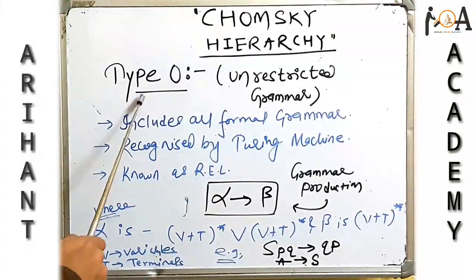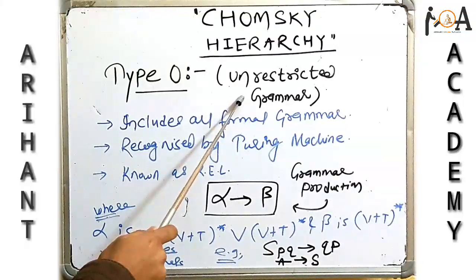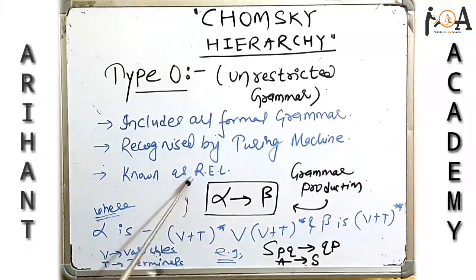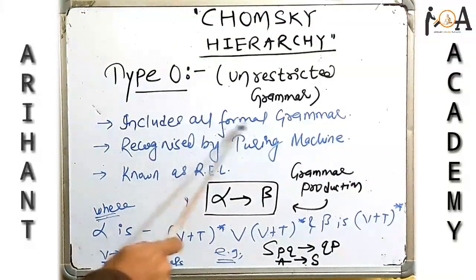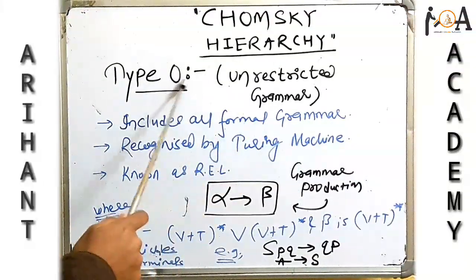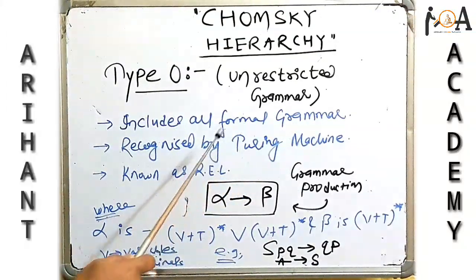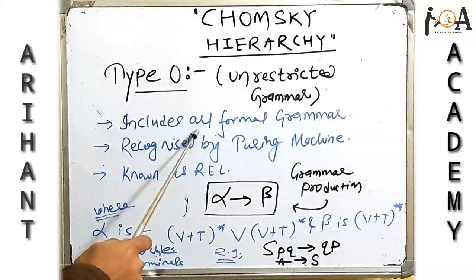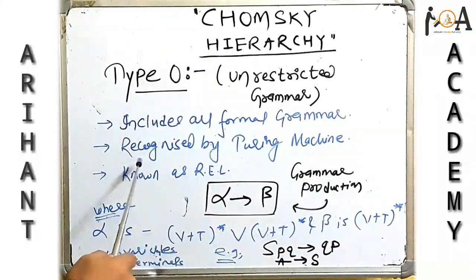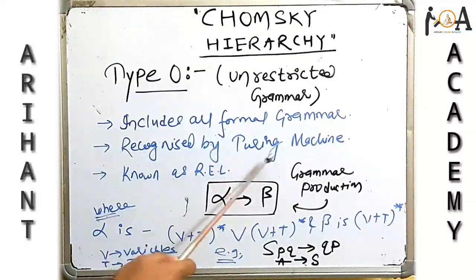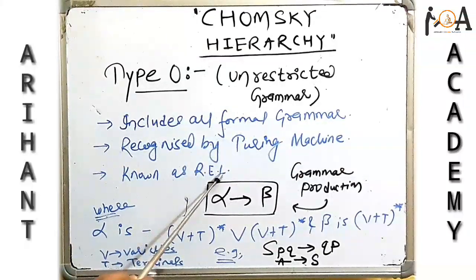Type 0 grammar is also called unrestricted grammar, or recursively enumerable language. It includes all formal grammars — basically Type 0 consists of all formal grammars, including Type 1, Type 2, and Type 3. It is the biggest set of grammar and is recognized by Turing machine.